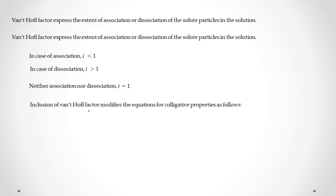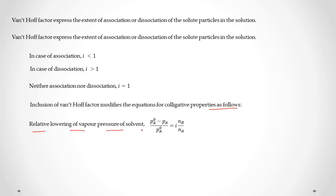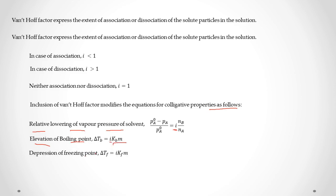Including the Van't Hoff factor modifies the equations for colligative properties as follows: Relative lowering of vapor pressure: (Pa⁰ − Pa)/Pa⁰ = i·Nb/Na. Elevation of boiling point: ΔTb = i·Kb·m. Depression of freezing point: ΔTf = i·Kf·m. Osmotic pressure of solution: π = i·CRT.